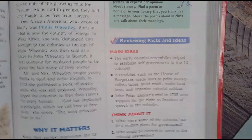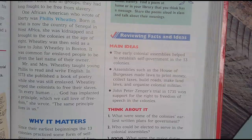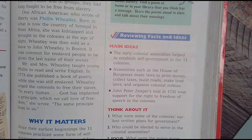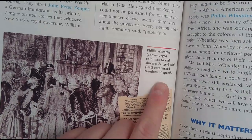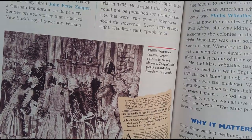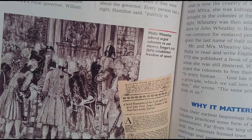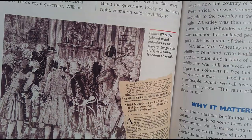Reviewing facts and ideas. The main idea is that early colonial assemblies helped to establish self-government in the 13 colonies. Assemblies such as the House of Burgesses made laws to print money, collect taxes, build roads, make land laws, and organize colonial militias. John Peter Zenger's trial in 1735 won support for the right to freedom of speech in the colonies. This is a picture of Zenger's trial — a victory for free press, August 4, 1735.